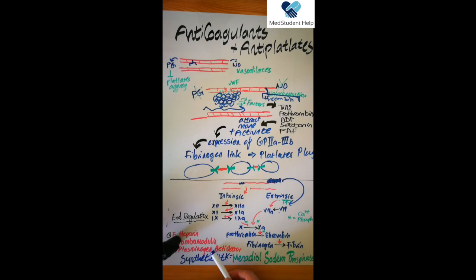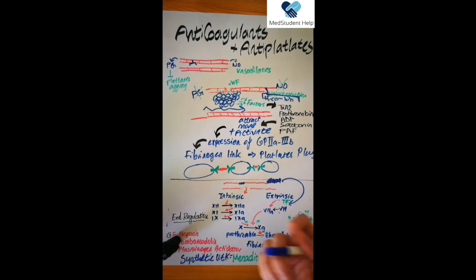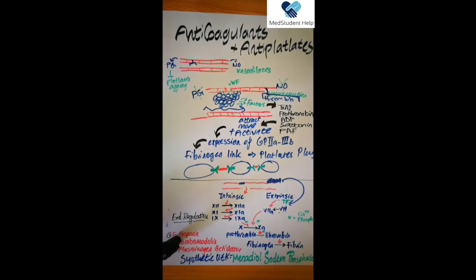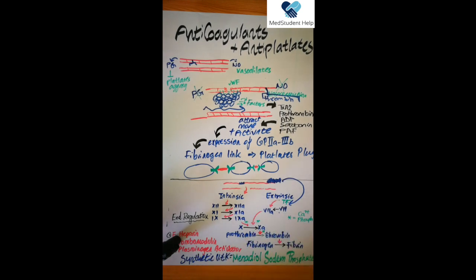The third endogenous regulation is tissue plasminogen activator (tPA). It activates plasminogen, and the activated plasminogen dissolves fibrin. So if we already have a blood clot or coagulation, we can break it down — break this fibrin mesh or fibrin clot — using plasminogen. These are the three endogenous regulations that stop our coagulation cascade from activating when we don't need it: endogenous heparin, thrombomodulin, and tissue plasminogen activator.